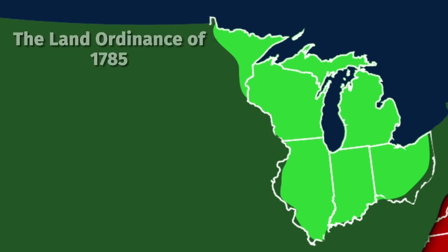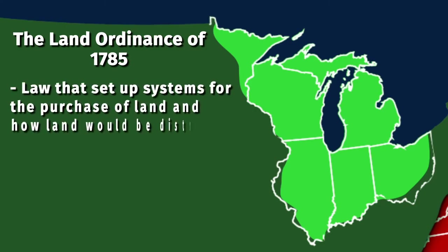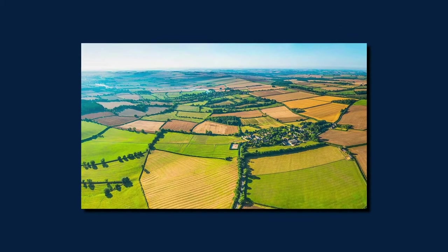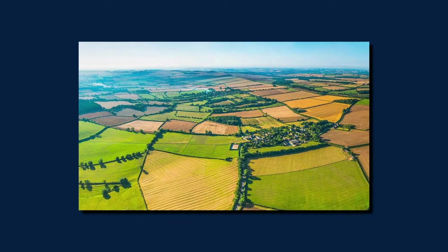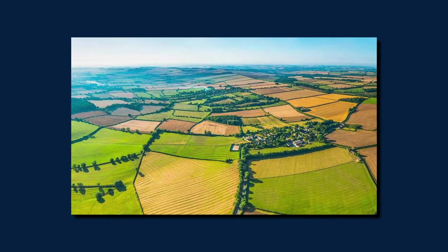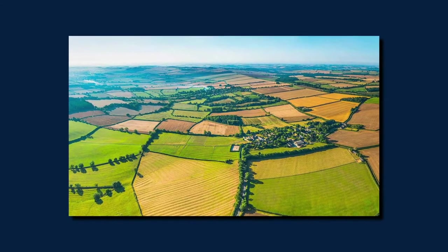The Land Ordinance of 1785, another law passed by Congress, also set up systems for the purchase of land and how land would be distributed. Have you ever flown over the Midwest and noticed that the land looked like it was made up of squares? That's because of the Land Ordinance.